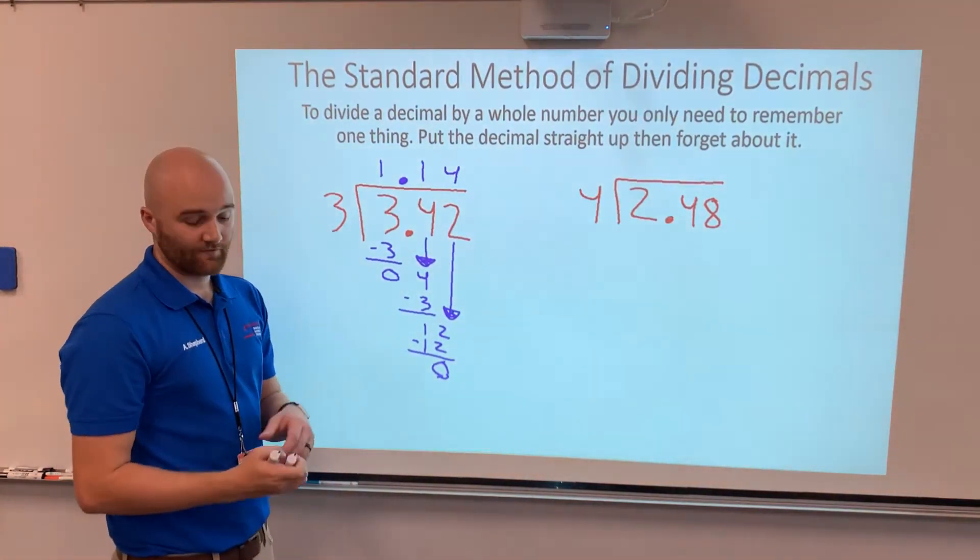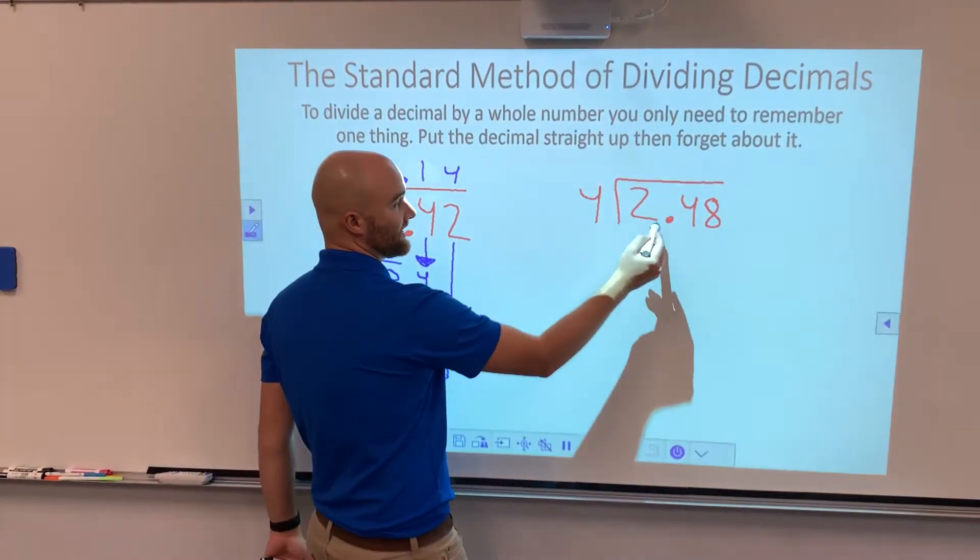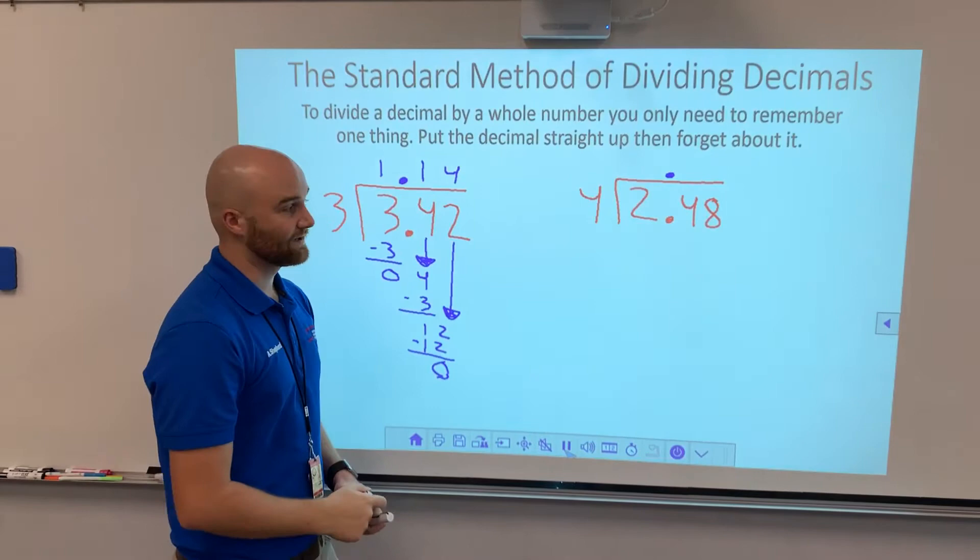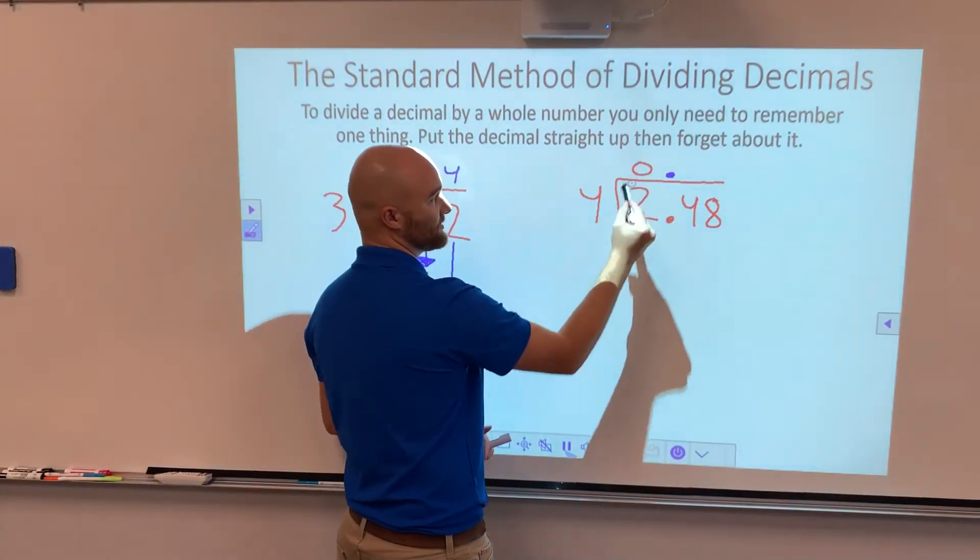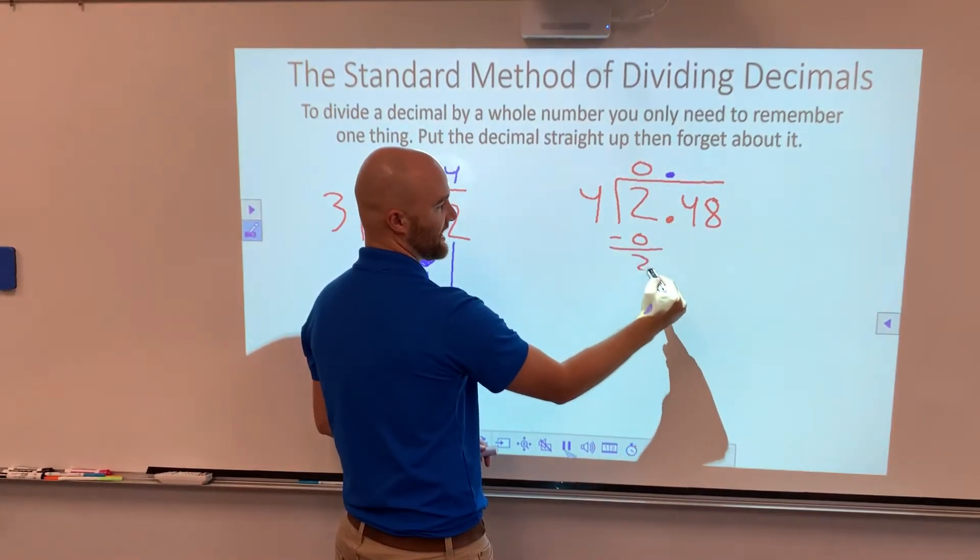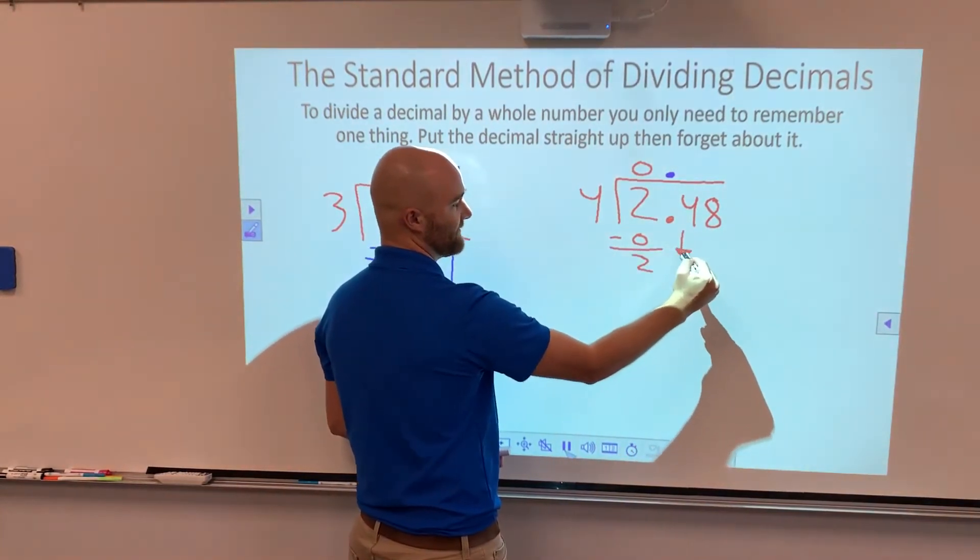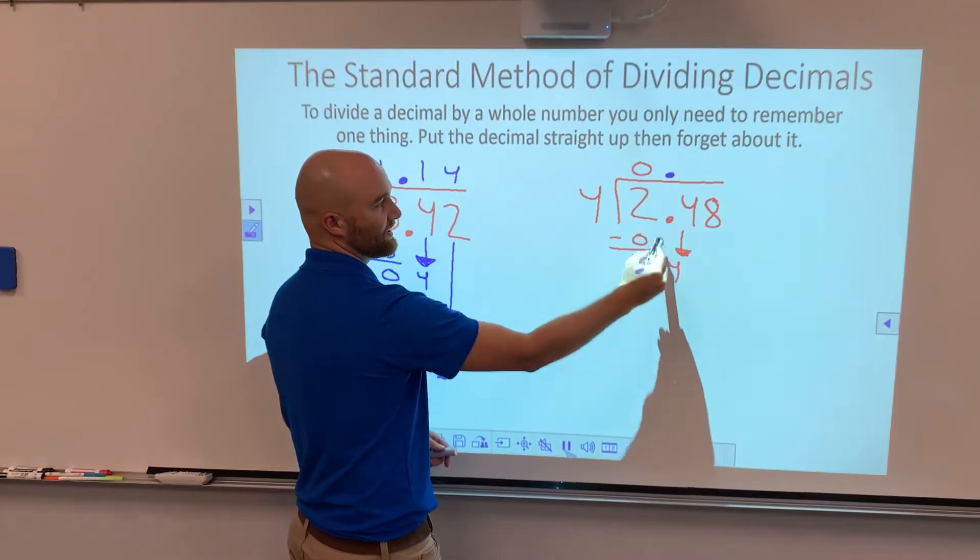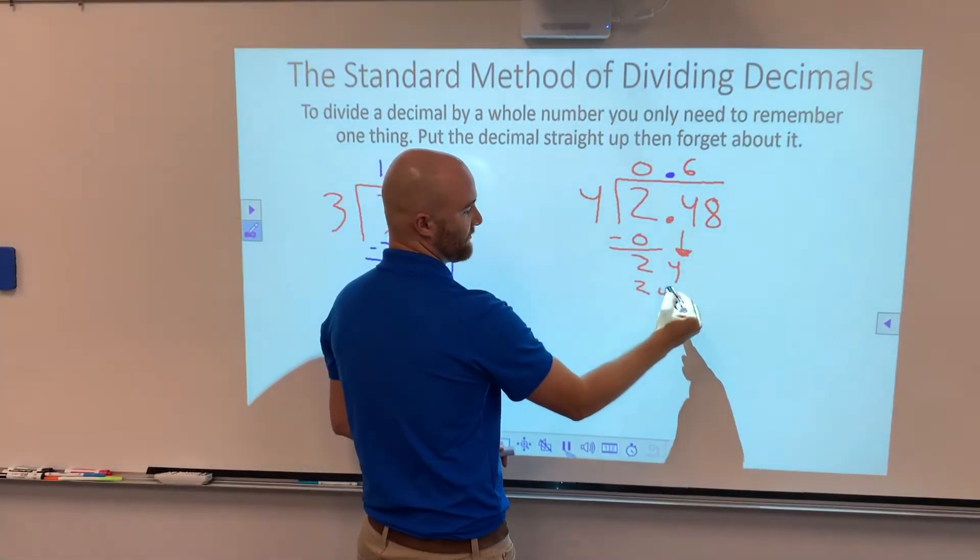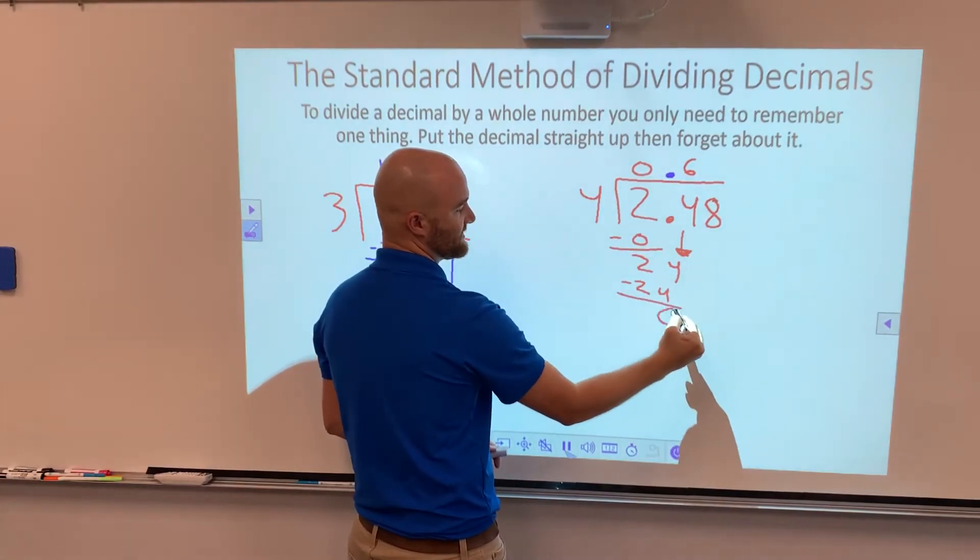Okay, so the first thing I'm going to do is put the decimal straight up, right there. Then I do my dividing. I say 4 goes into 2 zero times. 4 times 0 gives me 0. I do my subtraction. I have a 2. I bring the 4 down. 4 goes into 24 six times. 4 times 6 gives us 24. I do my subtraction. I have a 0 here.